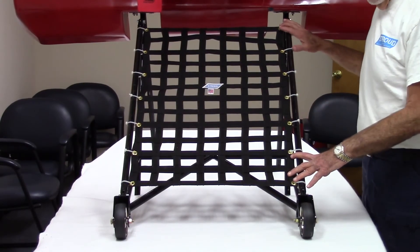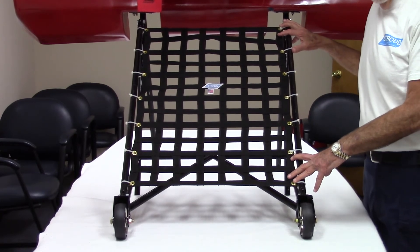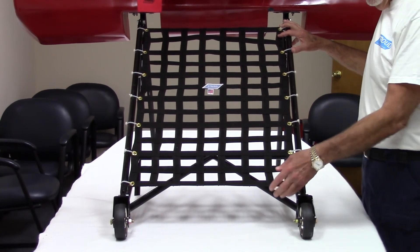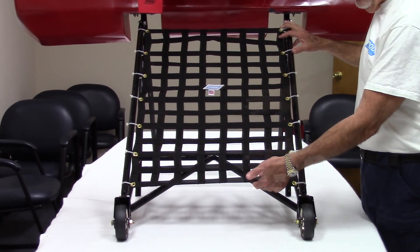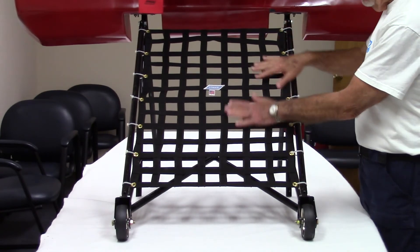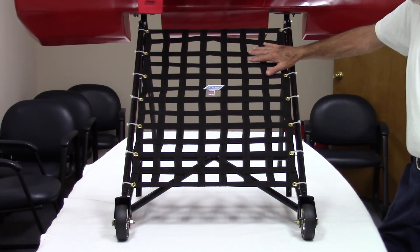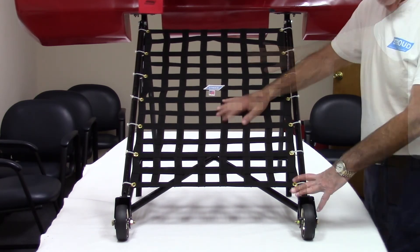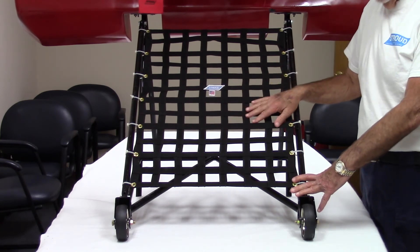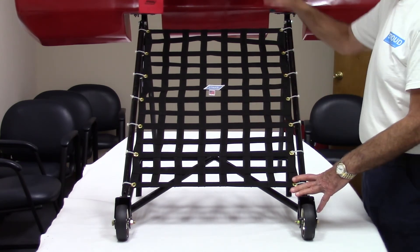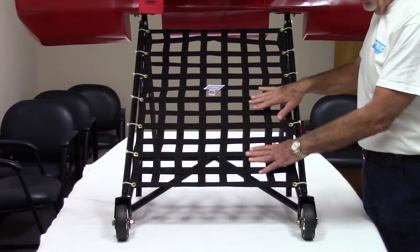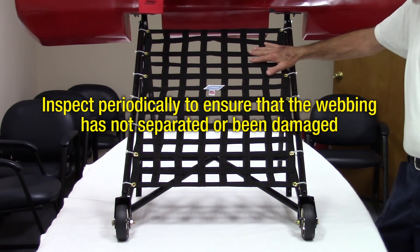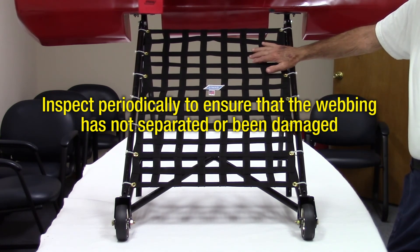We recommend attaching our wheelie bar nets with zip or cable ties through grommets as shown. They keep the net tight and in the event of the net catching on something, the ties will break before the car gets pulled over. Stroud wheelie bar nets can be ordered in a variety of colors, but black is recommended because of the proximity of the net to tire smoke and track dirt. There is no specification for the web openings on wheelie bar nets. Our openings are 4 to 5 inches unless requested otherwise. These nets do not require SFI certification, but periodic inspection is recommended to ensure that the webbing has not separated or has been damaged.